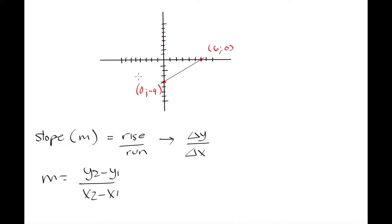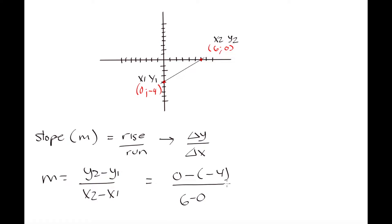So here we can label our two points: here we have x1, y1 and here we have x2, y2. To calculate our slope we are going to take y2 minus y1, so we have 0 minus negative 4, over x2 minus x1, which is 6 minus 0. When we have two minuses that becomes a plus, so this is going to become 4 over 6. And we can simplify this to 2 thirds. So our slope is going to be equal to 2 thirds.